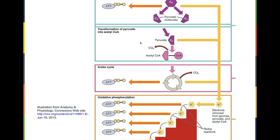We've got two stages at which the cell makes ATP, but the bulk of the ATP production happens at the last stage, which is called oxidative phosphorylation. It's a complex process that basically involves electrons moving down in a stairway fashion, and as the electrons move down, the energy is harvested to make lots and lots of ATP.